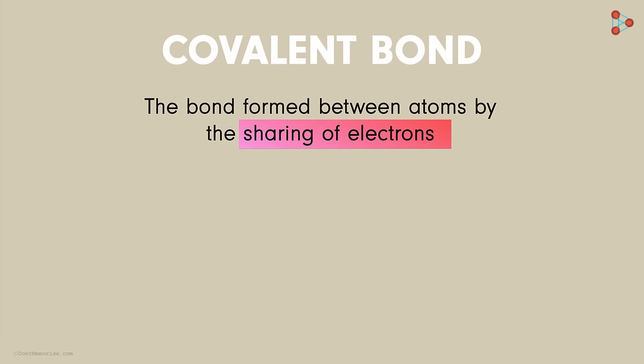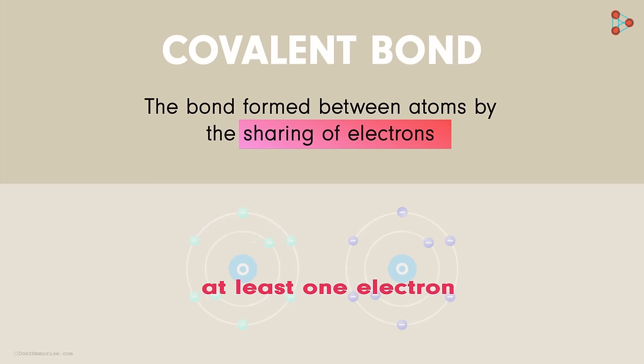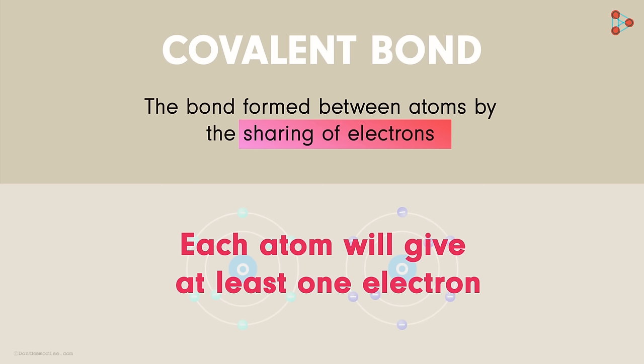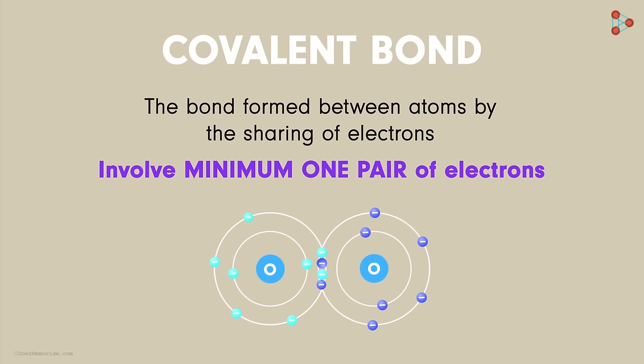When we say sharing, it means that both the atoms need to contribute for the bond formation, right? It indicates that each atom will give at least one electron from its valence shell. Does that tell us that a covalent bond will involve minimum of one pair of electrons? Yes, a covalent bond needs at least two electrons or simply one pair of electrons.